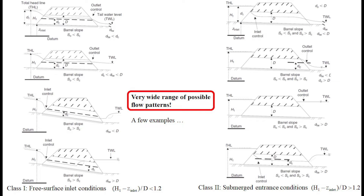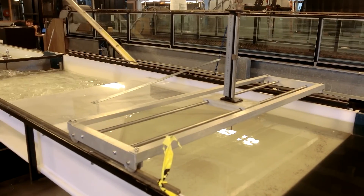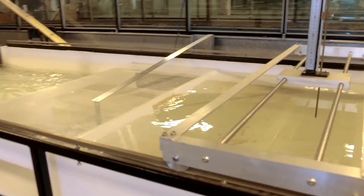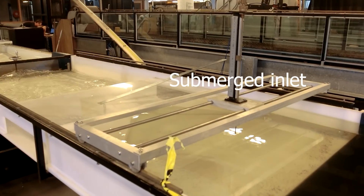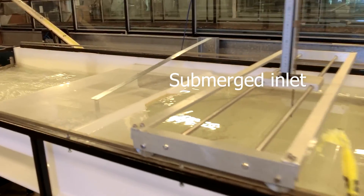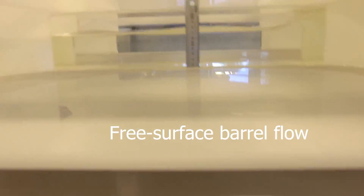A wide range of flow patterns may occur, as illustrated with a few examples. On the left, free surface inlet conditions, and on the right, submerged flow conditions. This movie presents a standard box culvert experiment at the University of Queensland, operating with a submerged inlet but inlet control and free surface flow in the barrel, as well as strong turbulent dissipation in the outlet.